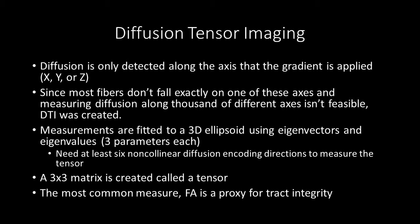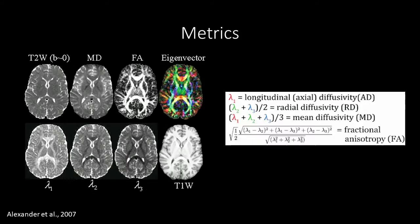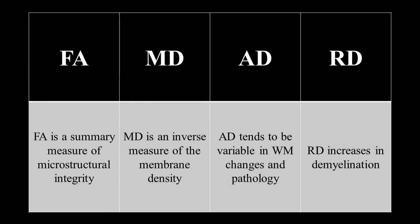The main metric used in DTI is fractional anisotropy, or FA. FA is a summary measure of microstructural integrity of myelin — it's sensitive to microstructural changes but does not have specificity to what the change is. There are three other measures: mean diffusivity (MD), axial diffusivity (AD), and radial diffusivity (RD). These can be used to figure out what the possible microstructural change is due to. MD measures membrane density, with higher values meaning lower density. AD measures the length of diffusion. RD is a measure of myelination thickness.